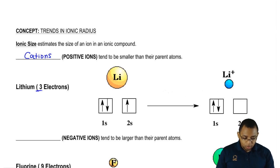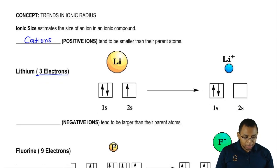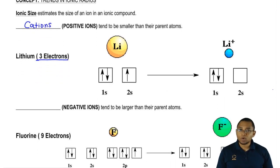Neutral lithium has three electrons, but lithium plus one means it loses one electron, so now it only has two electrons. Also, just notice this. That third electron lithium has when it's neutral is in the 2s shell.